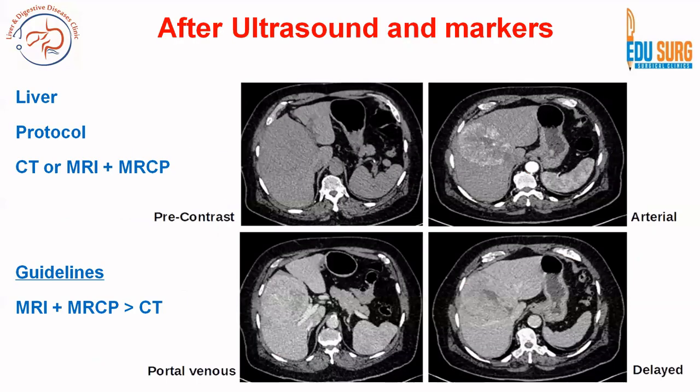After ultrasound and tumor markers, the next step per guidelines is an MRI with MRCP, which gives more information than a CT scan. Practically, based on availability, cost, contraindications to MRI or CT, nephrotoxicity, and patient preference, you can do a liver protocol which is a triphasic scan. All these points are considered when choosing between CT or MRI.